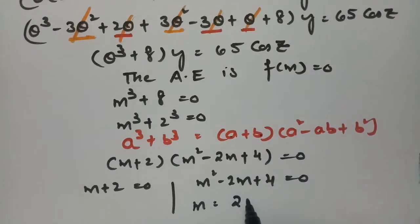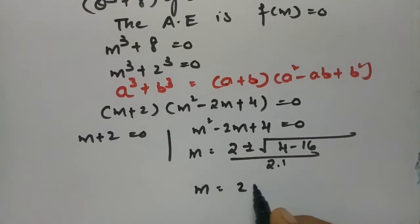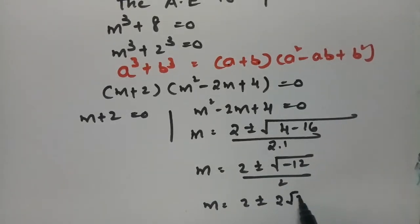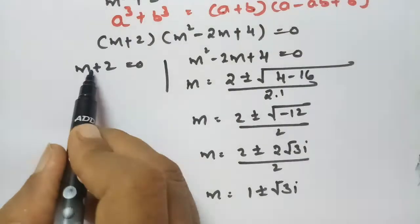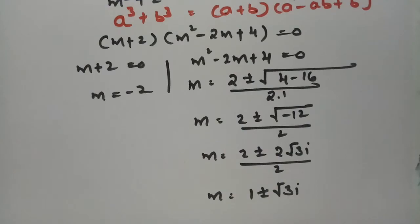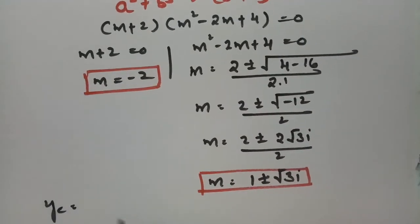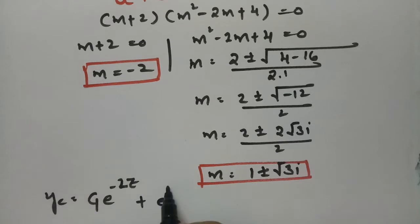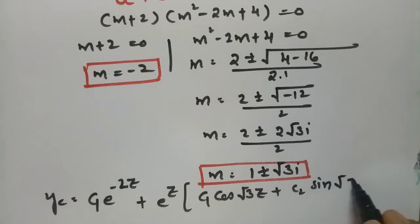Using the quadratic formula for m² - 2m + 4 = 0: m = [2 ± √(4 - 16)] / 2 = [2 ± √(-12)] / 2 = [2 ± 2√3·i] / 2 = 1 ± √3·i. So the roots are m = -2 and m = 1 ± √3·i. The complementary function is yc = c₁e^(-2z) + e^z(c₂ cos√3·z + c₃ sin√3·z).